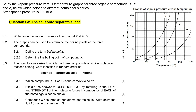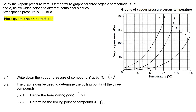Study the vapor pressure versus temperature graph for three organic compounds X, Y, and Z, which belong to different homologous series. The atmospheric pressure is 100. Questions will be split onto separate slides. Okay, let's begin.